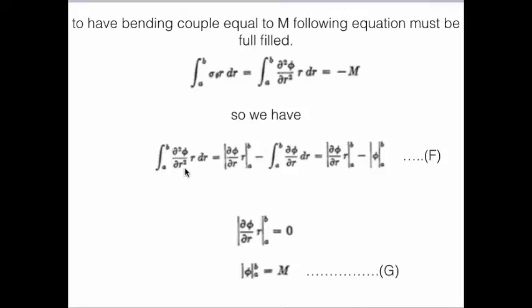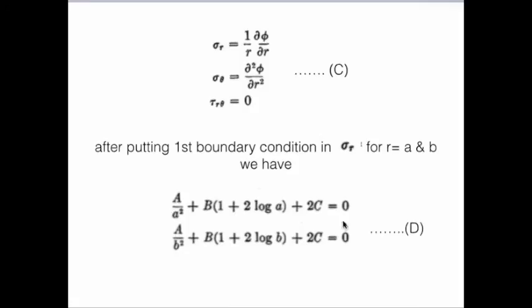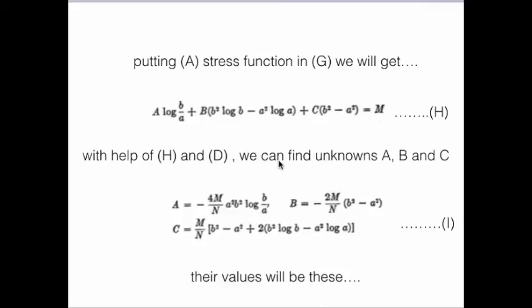So we'll get this kind of function at the end of those operations. And with respect to H and D - H is this formula and D was the formula you can say which we obtained after first boundary condition. Both formulas, with help of H and D, we can find unknowns a, b and c because there were two equations in D and in H it is one equation. So three unknowns and three equations are there, so we can easily find the constants A, B and C.